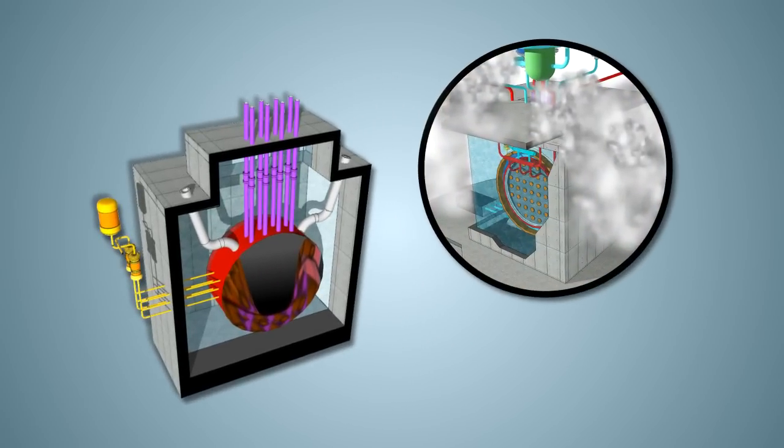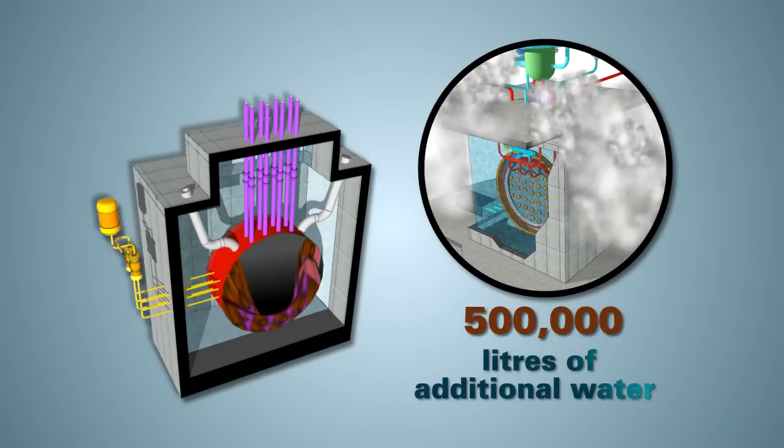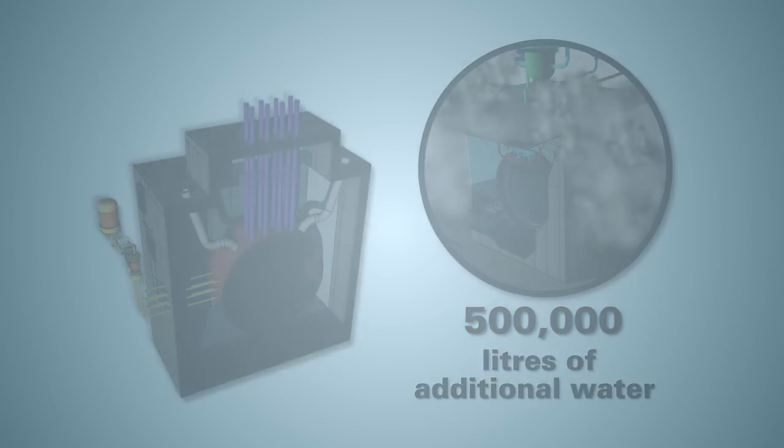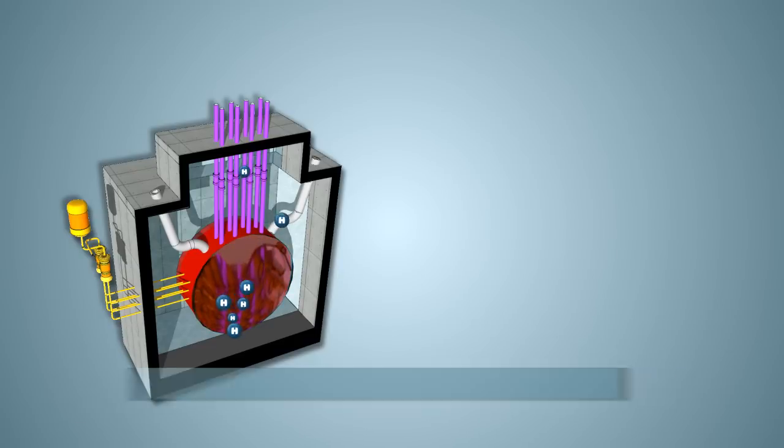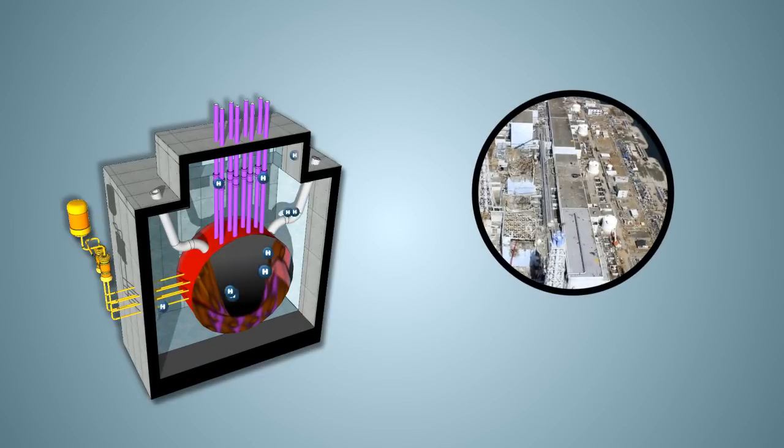The vault that holds the Calandria also holds about 500,000 litres of additional water. That water now starts to heat up. When nuclear fuel melts, it creates hydrogen, an explosive gas. You may remember this from the events in Japan.